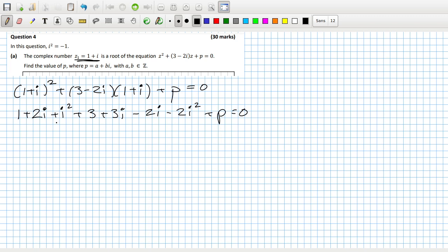So i squared is minus 1. The minus 2i cancels with the plus 2i. That becomes plus 2, so 3 plus 2 is 5, and then just 3i left. So then p is minus 5 minus 3i.